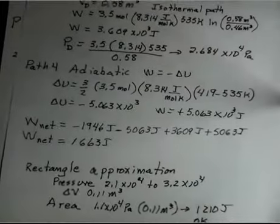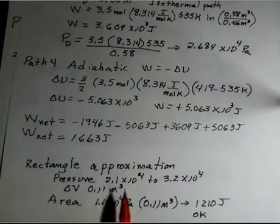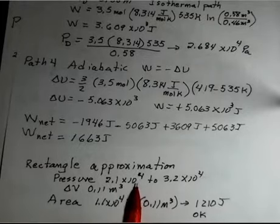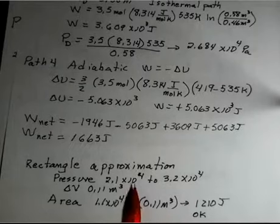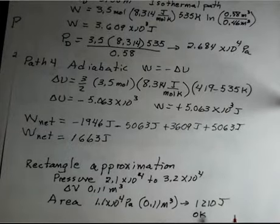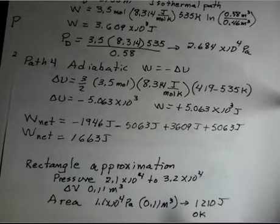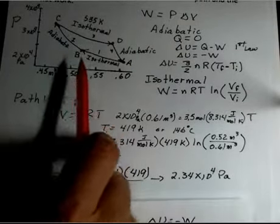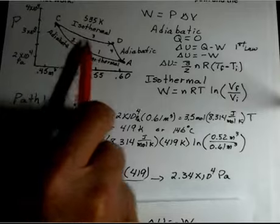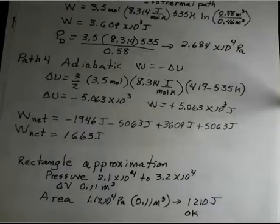And as a quick check, this is very approximate, but create a rectangle on the pressure volume diagram. I chose to use a pressure of 2.1 times 10 to the fourth to 3.2 times 10 to the fourth. Those would be the boundaries of my rectangle. And a change in volume of 0.11 cubic meters. When I do that, I get 1210 joules as the area enclosed, which is kind of in the ballpark. It's not meant to be a perfect calculation. It's tough to make a rectangle out of this shape, but I just guessed at some numbers that would kind of give me a rectangle. And it tells me at least I haven't made a power of 10 error. I'm reasonably close to my more accurate result.